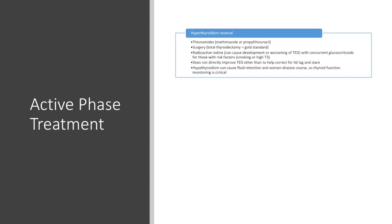Now let's take a close look at the components of active phase treatment. One of the most important steps is hyperthyroidism reversal. None of these hyperthyroidism reversal methods directly improve thyroid eye disease. Also be wary that hypothyroidism can cause fluid retention and worsen disease course, so thyroid function monitoring is critical.